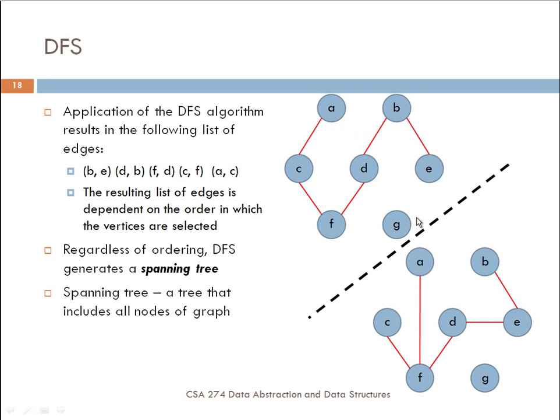If you change the order in which you first visit nodes, so instead of visiting A first, let's say you visited F first, that will change the way that, or the nodes that are included. Well, not the nodes, but the edges that are included in the DFS walk or the results of the DFS algorithm. For instance, if we started with F first, I could visit C. Actually, if we started with, let's say we started with B first, I could visit E, then D, then F, then A, then C. So the order actually matters.